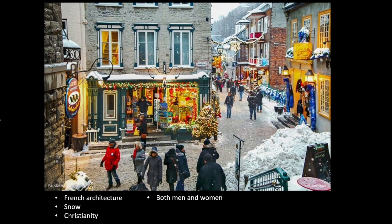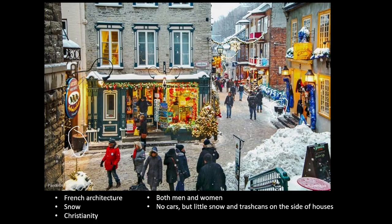There are both men and women in this picture. There are a lot of people outside, so there's not really a major conflict problem. There are no cars, but there are trash cans on the side of the houses, so vehicles have gone by and there's likely a garbage collection service. This is Quebec, Canada — on the eastern side of Canada. There's a lot of French characteristics here, with both English and French on the signs, because of previous French colonization on the eastern side of Canada. So we see a lot of French culture there through relocation diffusion.